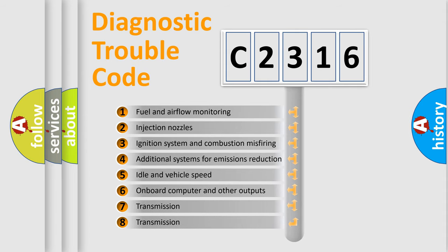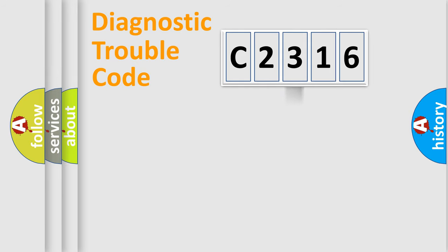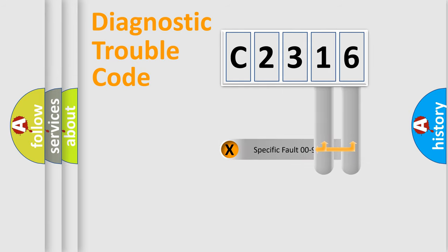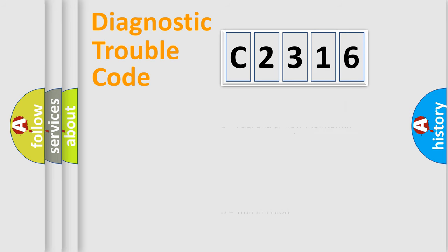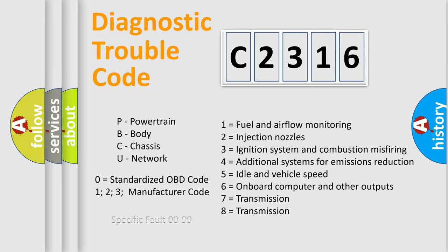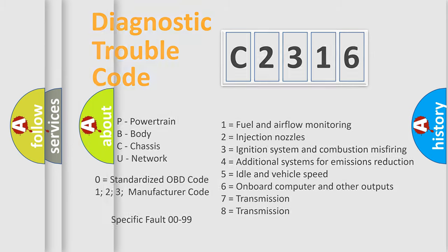The third character specifies a subset of errors. The distribution shown is valid only for the standardized DTC code. Only the last two characters define the specific fault of the group, and this division is valid only when the second character is expressed by the number zero.